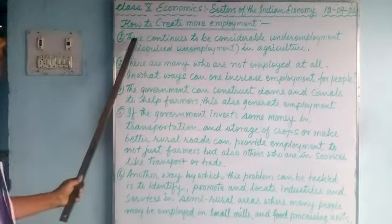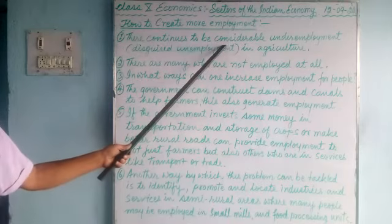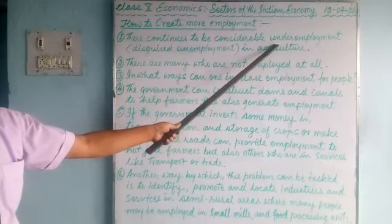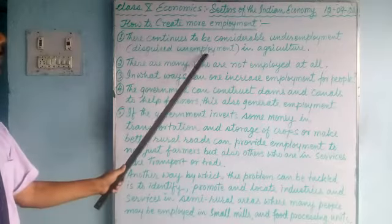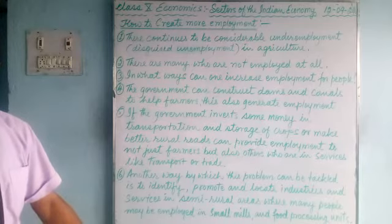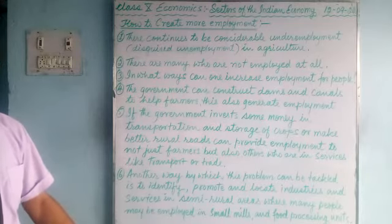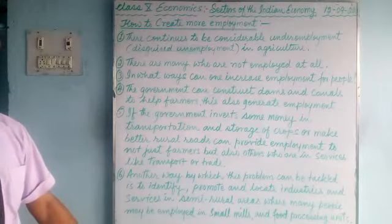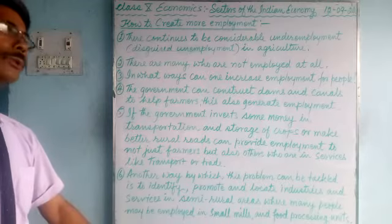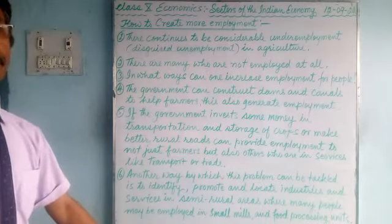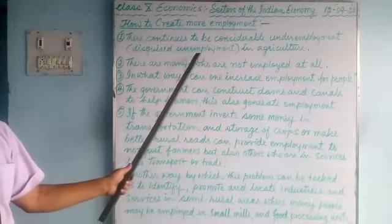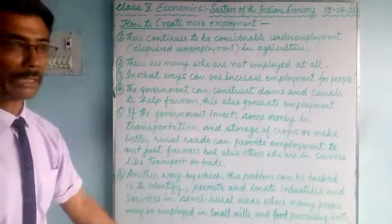There are six points here. Listen carefully and pay attention. There continues to be considerable underemployment in agriculture. Underemployment, or disguised unemployment, means where many people are employed but production doesn't increase — for example, four people are working where only two are needed, yet the production remains the same. This kind of employment is called disguised unemployment or underemployment.